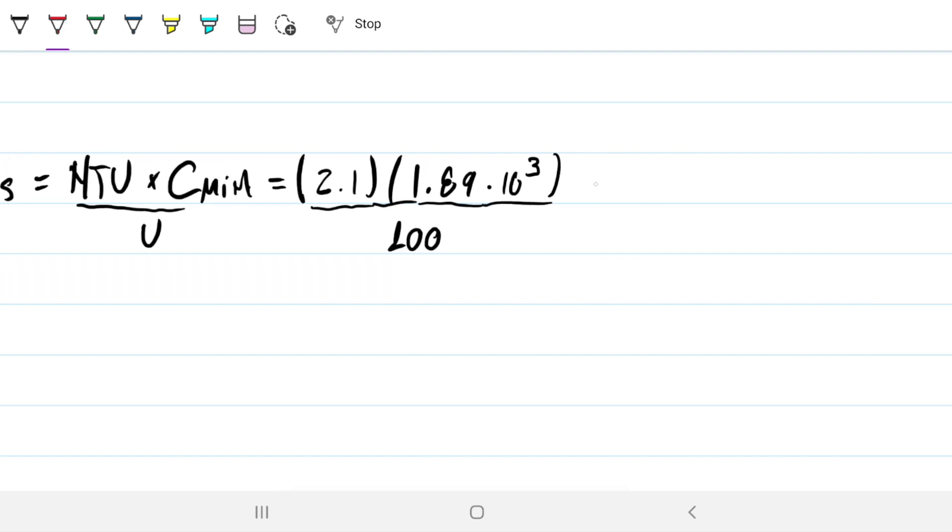Unit-wise, what do we have? There's no dimension to NTU, so that just stays there. This guy here is watts per Kelvin, and on the bottom there we have watts per meter-squared Kelvin, which conveniently and not coincidentally leaves us with units for area. So I got 39.69 square meters. So that will be our answer for this problem here.